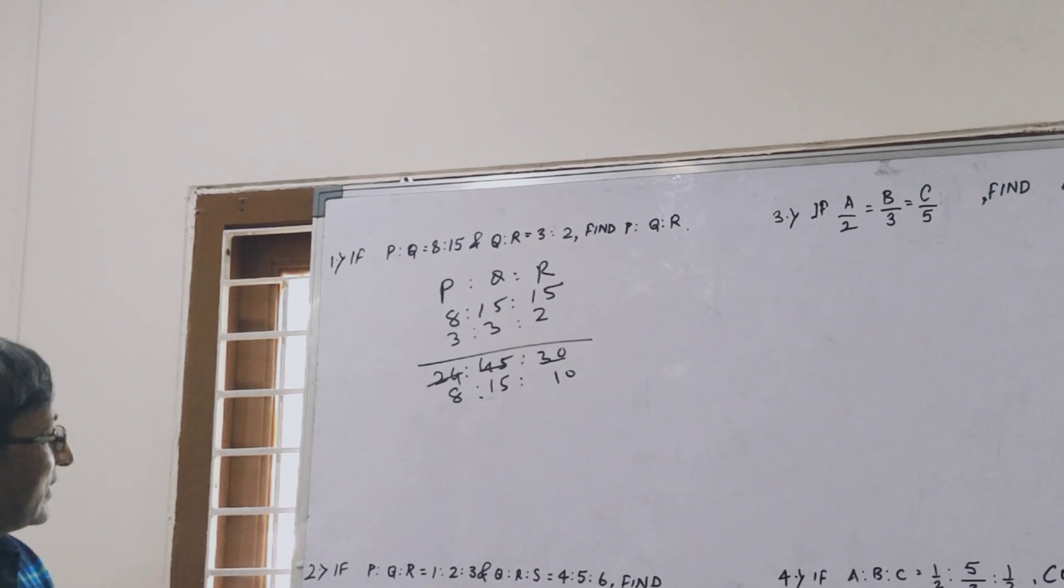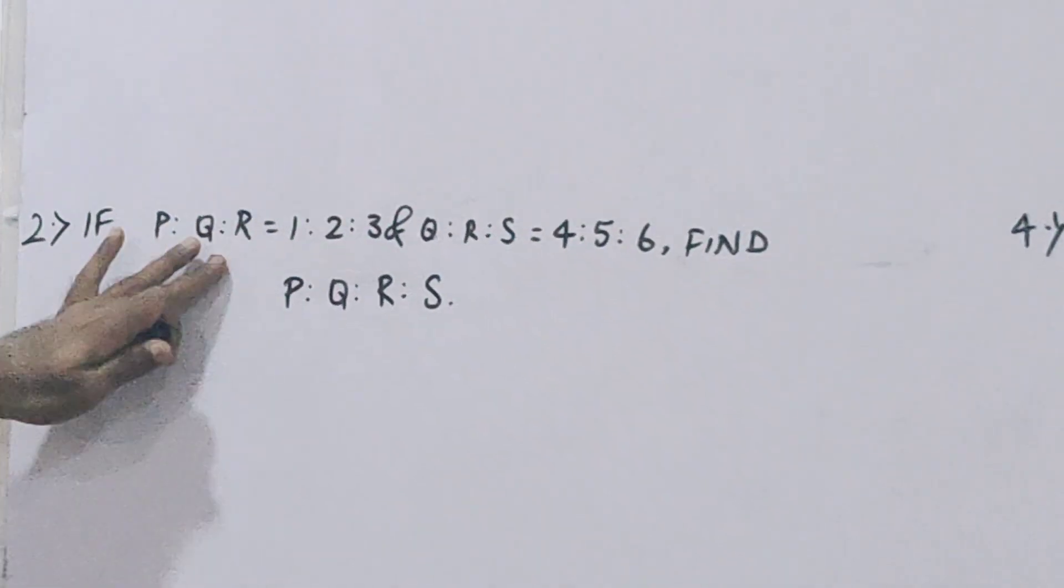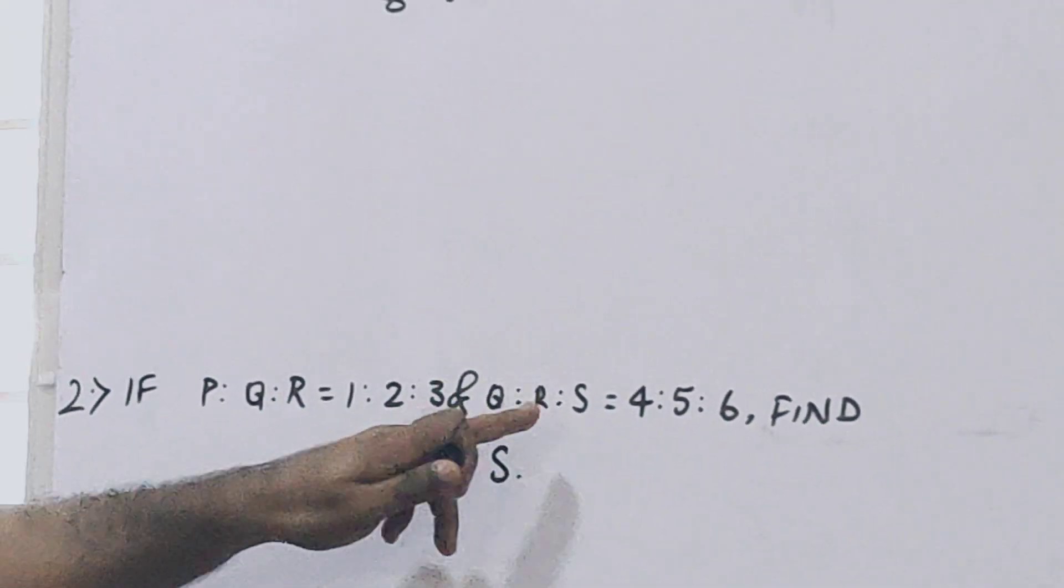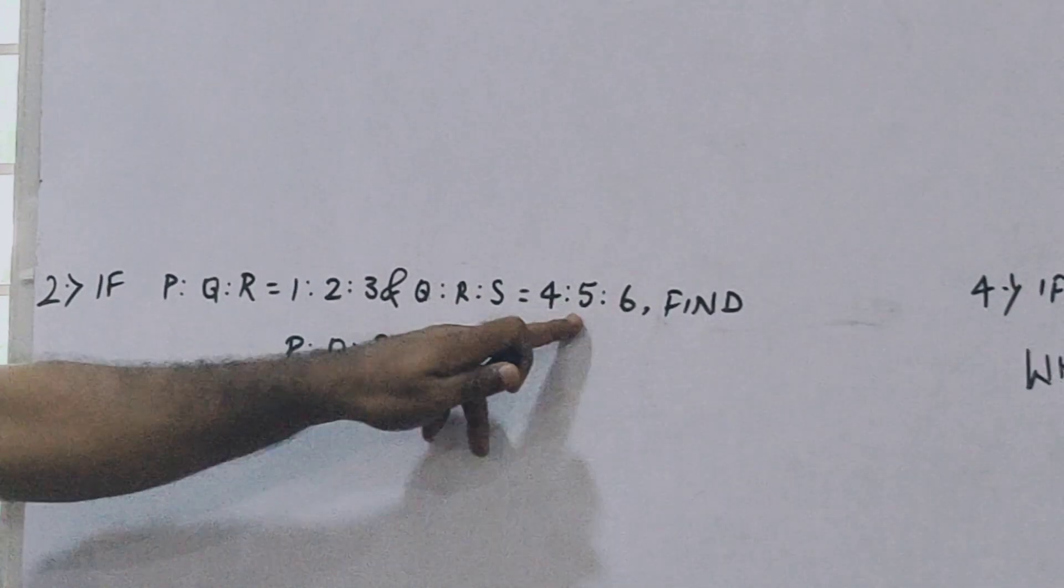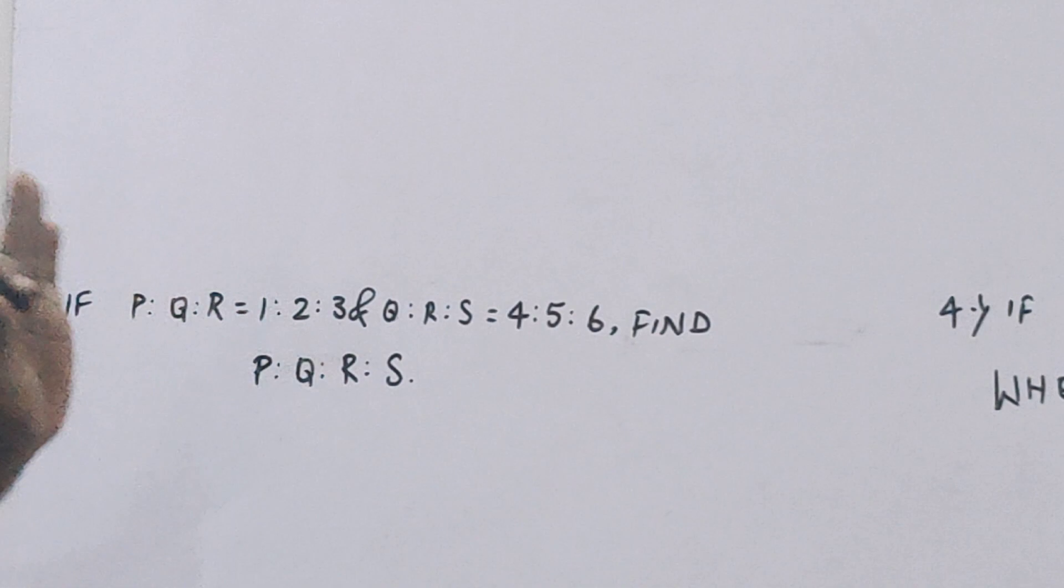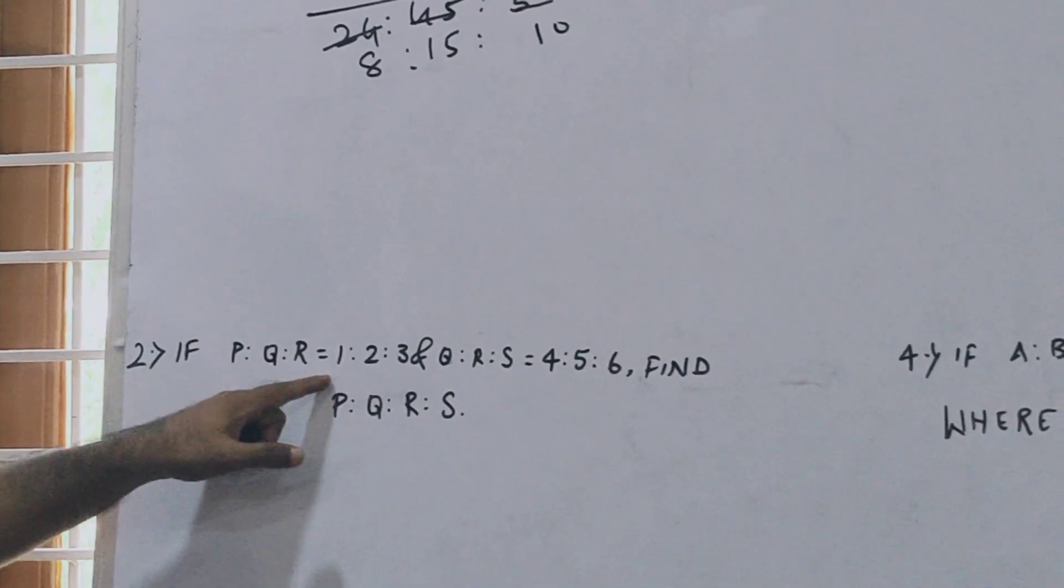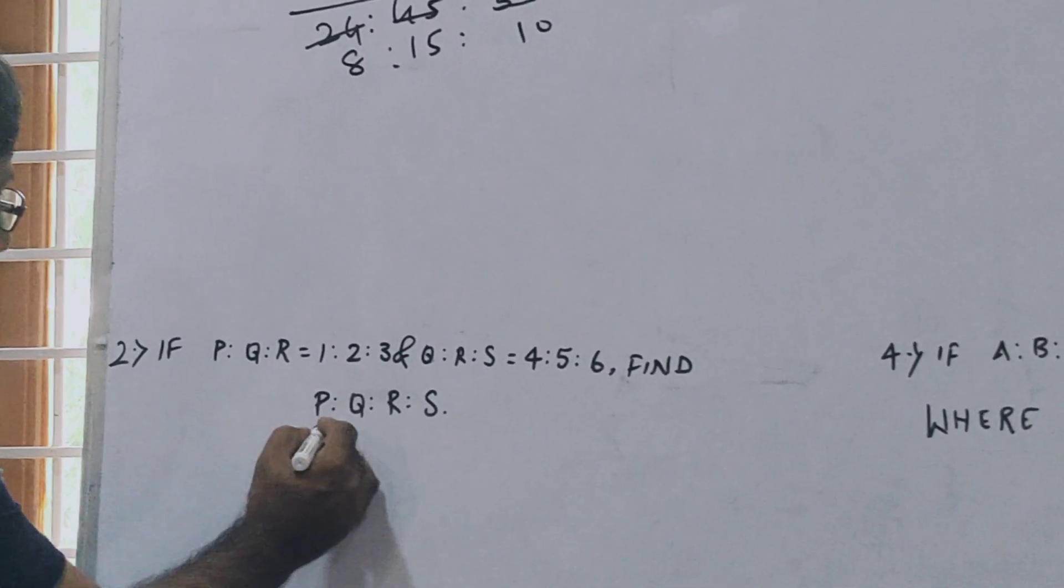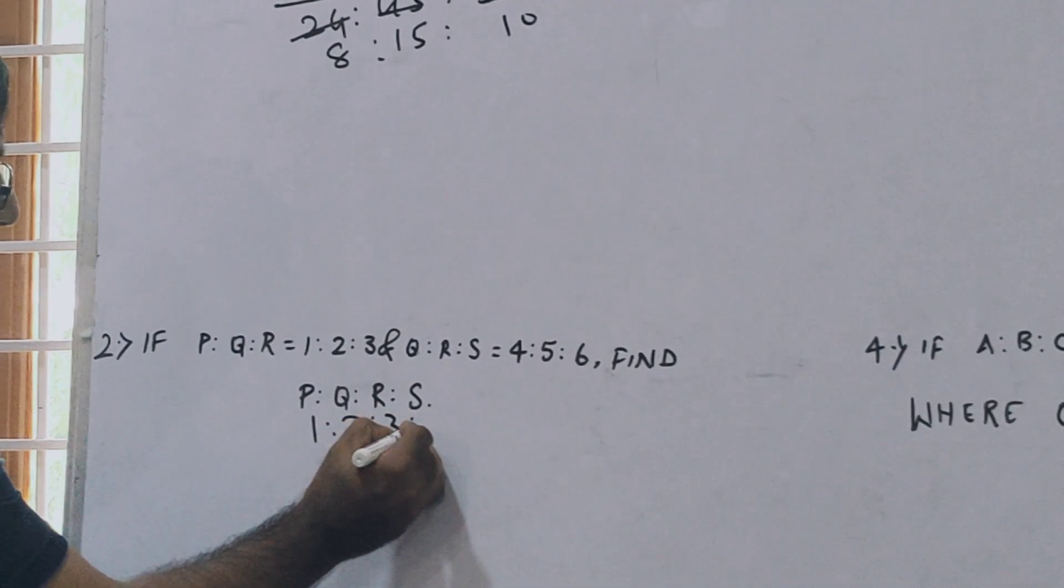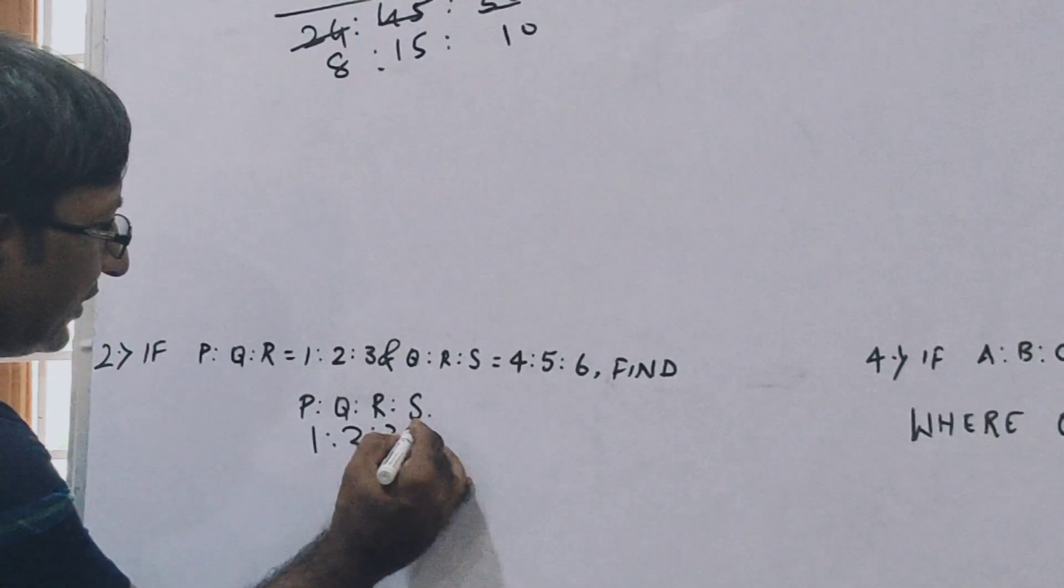In the same way, suppose in the second question P ratio Q ratio R is given 1 ratio 2 ratio 3, and Q ratio R ratio S is given 4 ratio 5 ratio 6. We have to find P ratio Q ratio R ratio S. Again the process is the same. Write P, Q, R, S. So P, Q, R is 1, 2, 3. S is vacant and it is near to R, so write here 3.